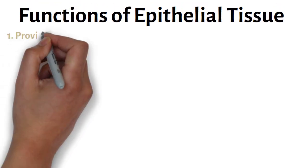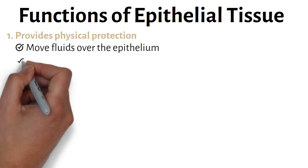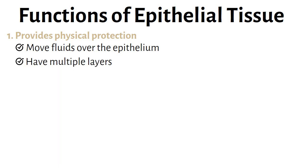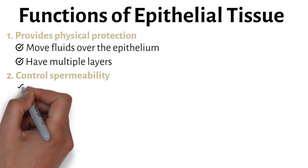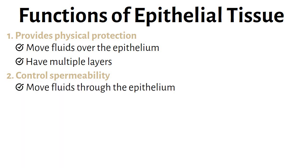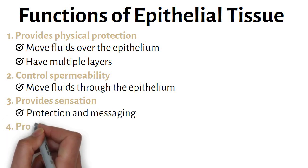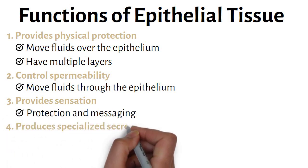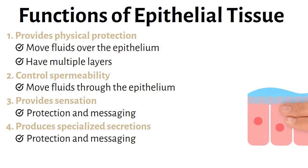The functions of epithelial tissue include: first, providing physical protection by moving fluids over the epithelium and/or by having multiple layers; second, controlling permeability by moving fluids through the epithelium; third, providing sensation which offers protection by relaying messages about tissue damage; and fourth, producing specialized secretions that can also protect the underlying tissues and relay messages to other cells via secretions.